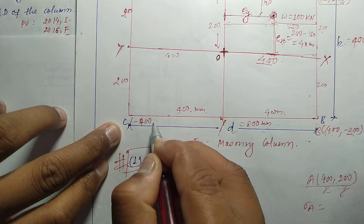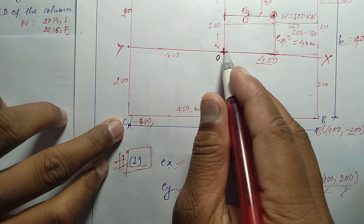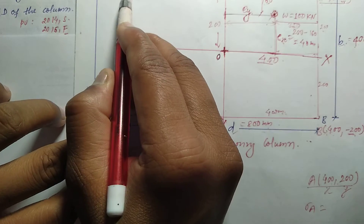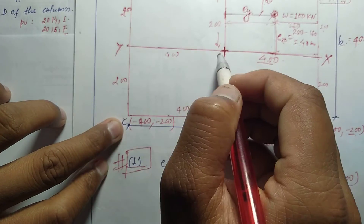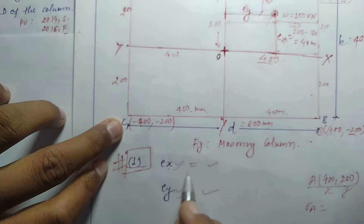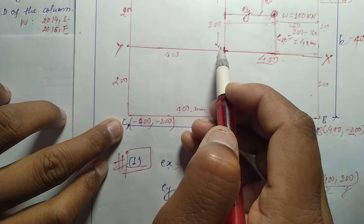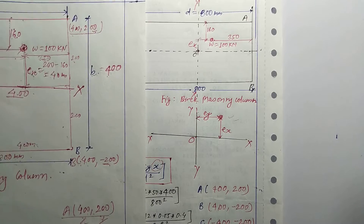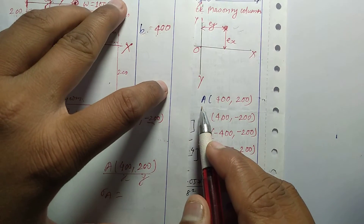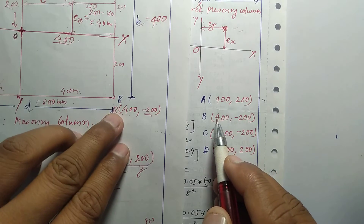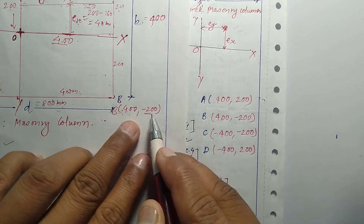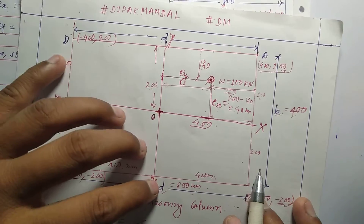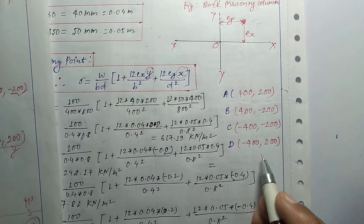The corner coordinates are: minus 400, minus 200 for point A; minus 400, minus 200 for point B; minus 400, minus 200 for point C; and minus 400 for point D.